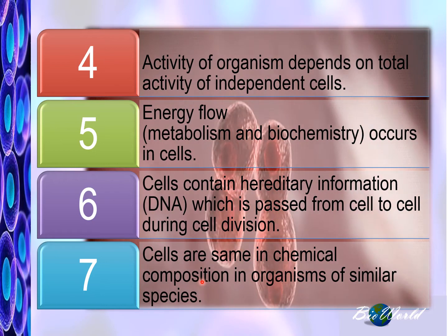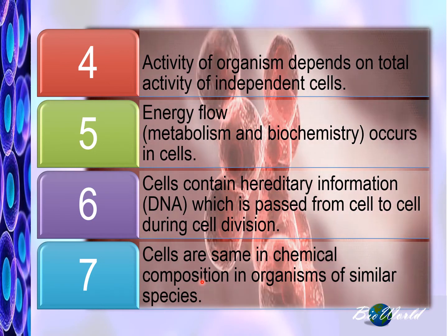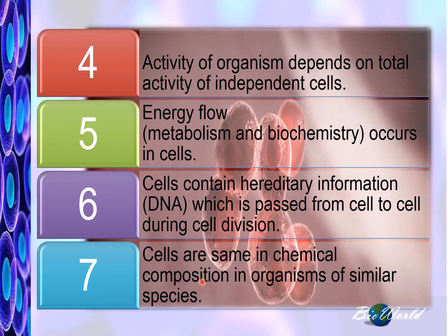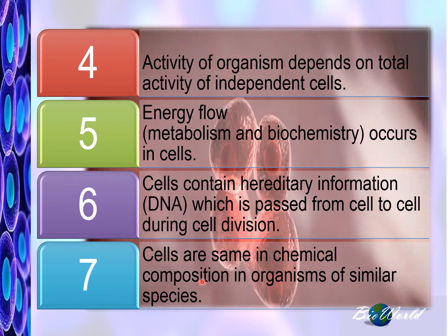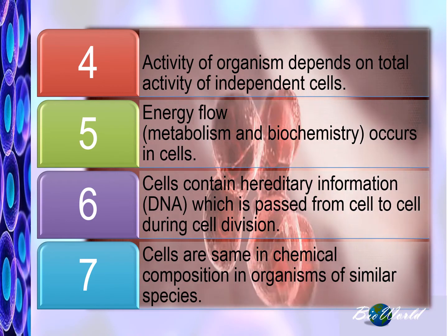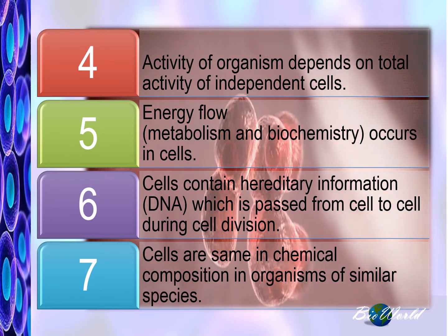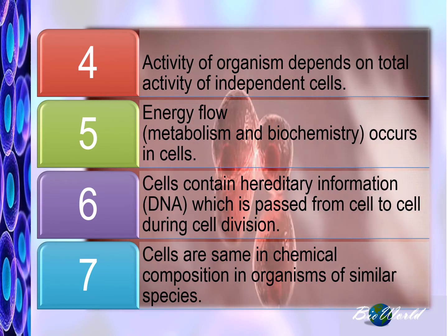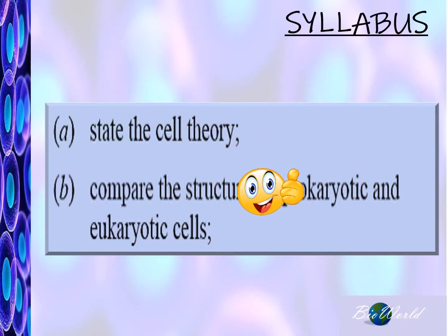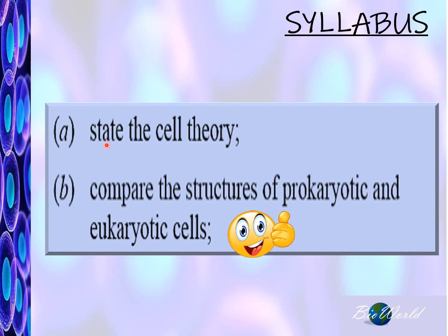Most of what you have seen in the cell theory are facts you already know today, but these concepts were brand new when first introduced into the scientific world. Now that we're done with the cell theory, let's move on to discuss two types of cells: the prokaryotic cell and the eukaryotic cell.